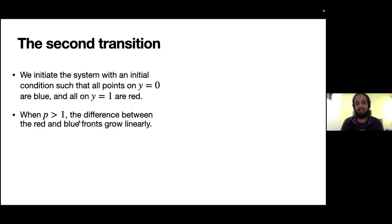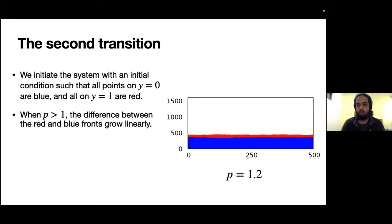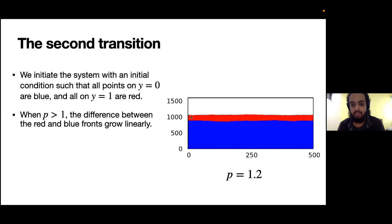By the way, we're back in the Chase-Escape continuous time limit, so there's only one parameter p. When p is greater than one, we would expect that the difference between the red and blue fronts would grow linearly in time. You can see that after some time the evolution looks something like this - there's a sea of blue that has formed. However, the red are surviving and moving forward, and as time goes on you see that the red front actually keeps growing in size.